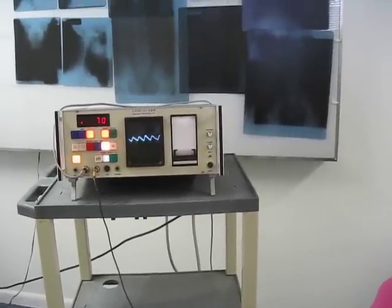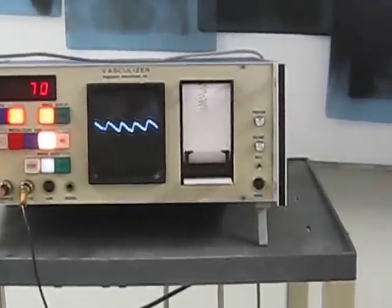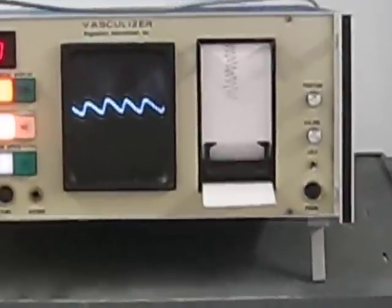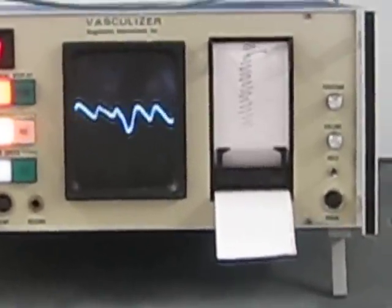This is a 29 year old patient in which we're doing a thoracic outlet study. This is going to be on the left side of her hand. We're establishing a baseline in position number one as you can see. The wave is normal and the amplitude looks fine.